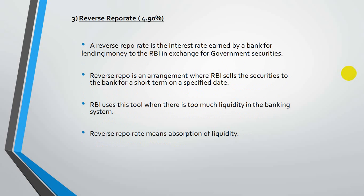The third tool is the reverse repo rate, with the current rate at 4.90%. Just as banks borrow funds from RBI, RBI can also obtain money when required by taking it from commercial banks. The reverse repo rate is the rate at which banks provide money to RBI in exchange for its securities, and RBI uses this tool when there is excess liquidity in the banking system to curb that liquidity.